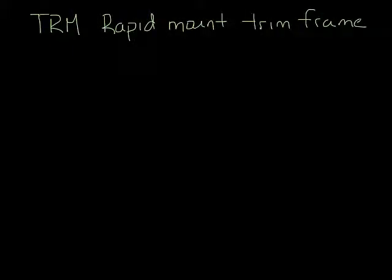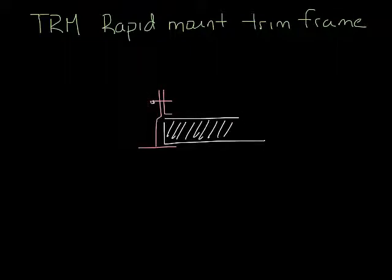That's where the TRM rapid mount trim frame comes in handy. The TRM mounts to the sheetrock ceiling using adjustable fastening clips. It kind of looks like this from the side. And the ceiling would fit in right here.